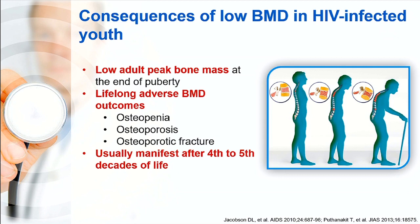What is the impact of low bone mineral density among HIV-infected adolescents? First, it can cause a lower adult peak bone mass at the end of puberty, leading to a lifelong adverse bone effect—osteopenia, osteoporosis, or even fracture. However, these complications usually do not occur during early life; they typically manifest after the fourth or fifth decade of life, so we have to monitor for these long-term complications.